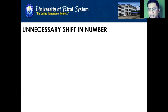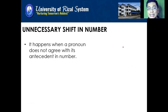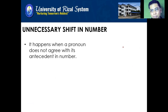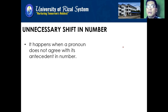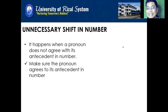We also have unnecessary shift in number. There are times when the pronoun does not agree with its antecedent in number — similar to subject-verb agreement. If the subject is singular, the verb should also be singular; if the subject is plural, the verb should also be plural. The same applies to pronouns: if your subject is singular, you have to use a singular pronoun. When we talk of number in grammar, we are referring to singular or plural. So make sure the pronoun agrees with its antecedent in number.